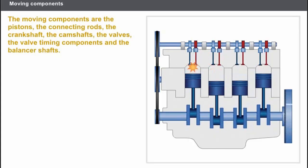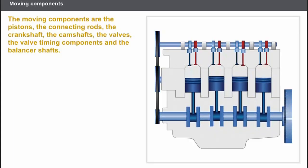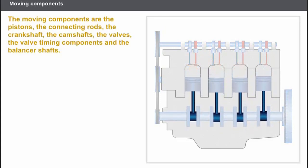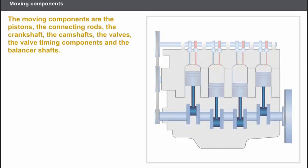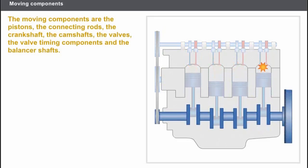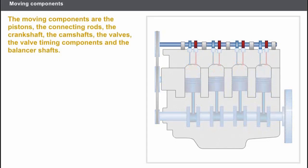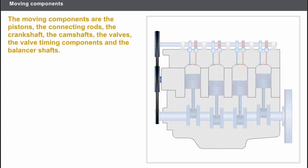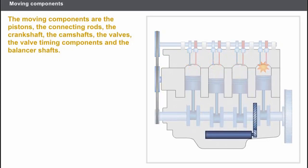The engine moving components are the following: the pistons and their rings, the connecting rods and their bearing shells, the crankshaft, the camshafts, the valves, the timing and the valve timing components dephasor, and on certain engines, the balancer shafts.